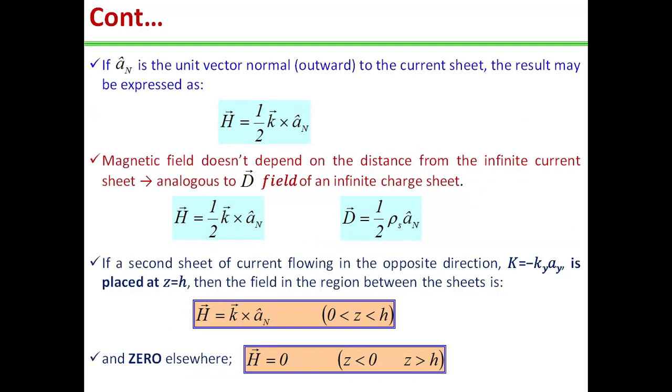In general, for an infinite sheet of current density K, magnetic field intensity can be expressed as H is equal to half K multiplied by a_n, where a_n is the unit vector normal outward to the current sheet to the point of interest. Thus magnetic field does not depend on the distance from the infinite current sheet. This is analogous to the electric flux density D of an infinite charge sheet. Hence, in magnetostatics we can write vector H is equal to half K cross a_n, and in electrostatics we can write D is equal to half ρ_s a_n, where ρ_s is the surface charge density.